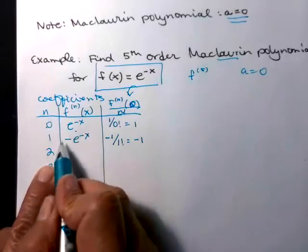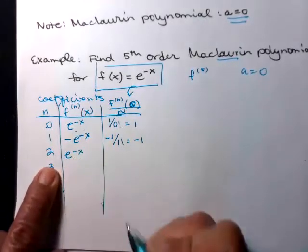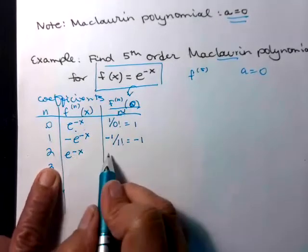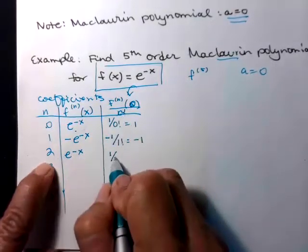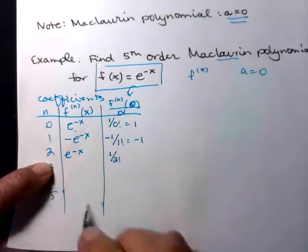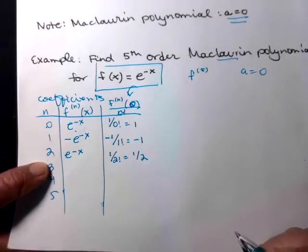n is two. So second derivative. So the negative sign comes back out in front. So I have e to the negative x. Evaluate at zero. So that'll be positive one over n factorial. So two factorial, two times one, that's just a two. So now I have that coefficient, one half.